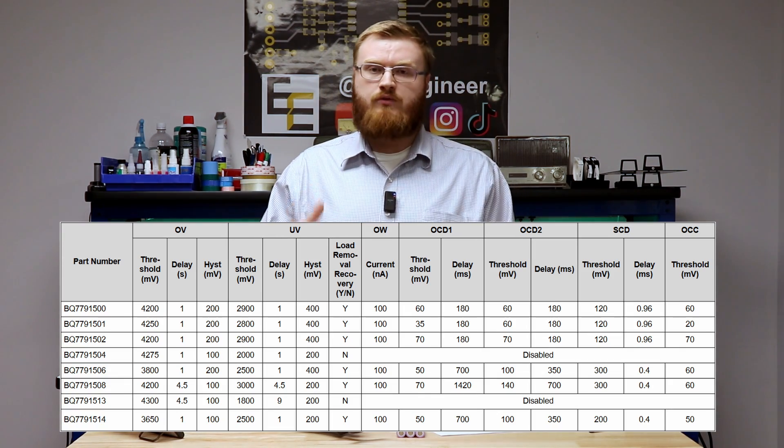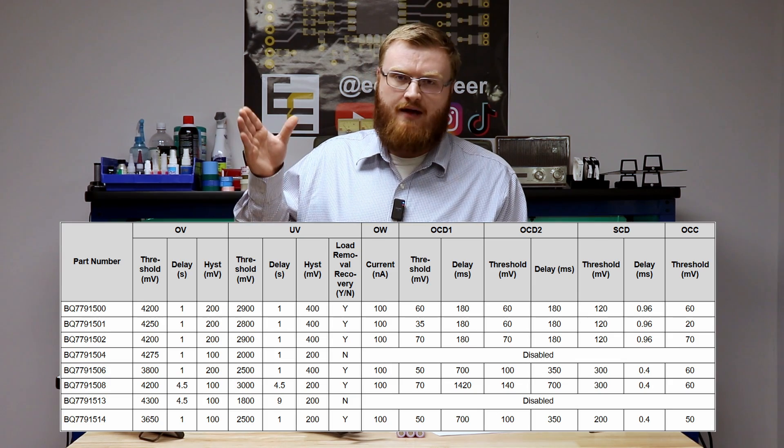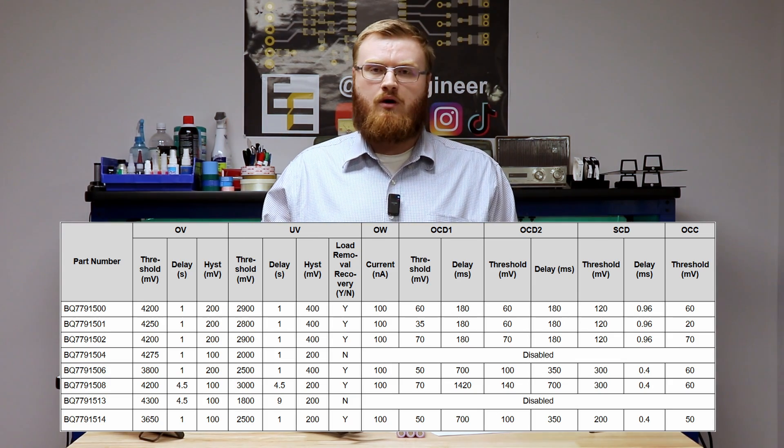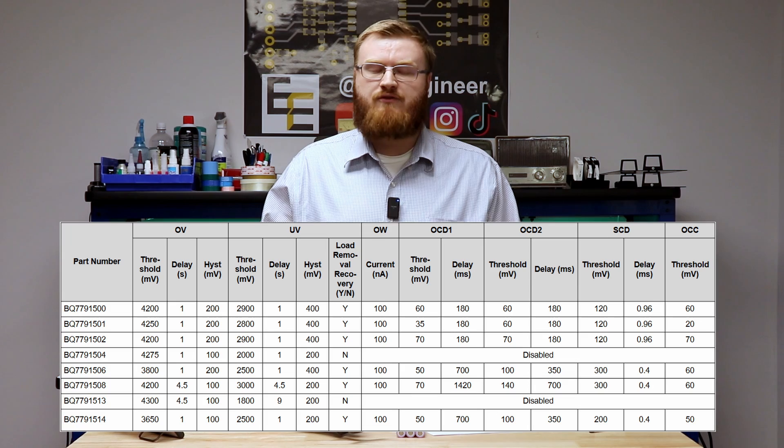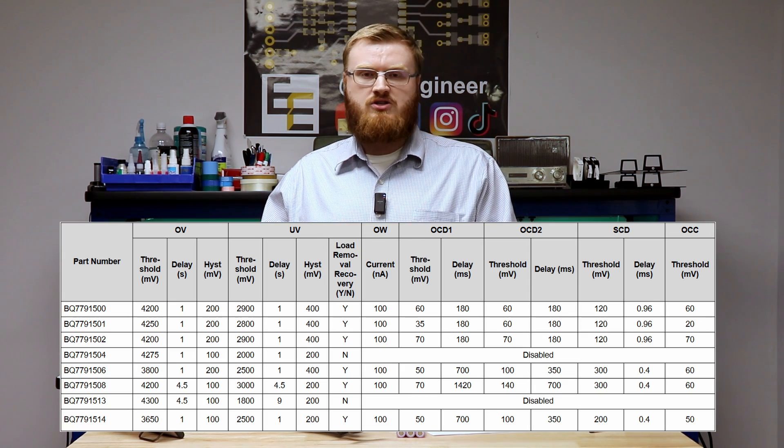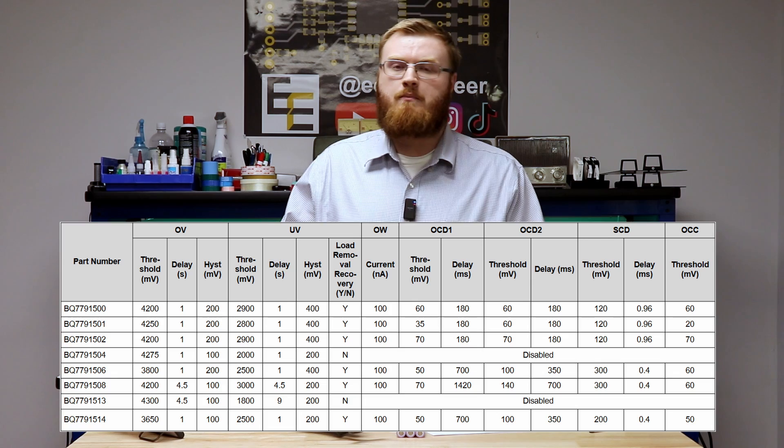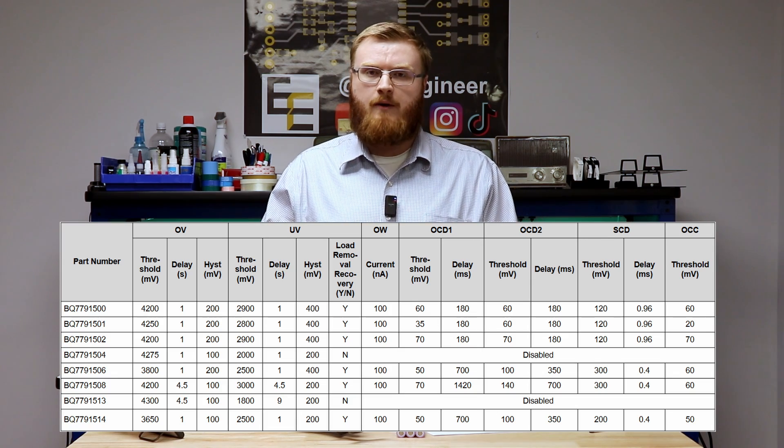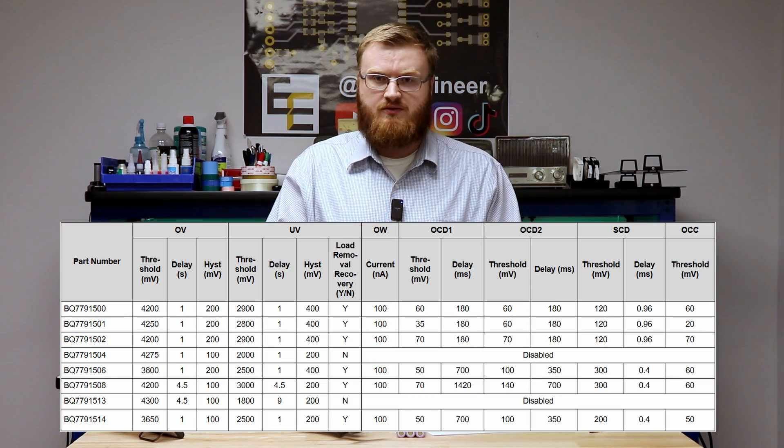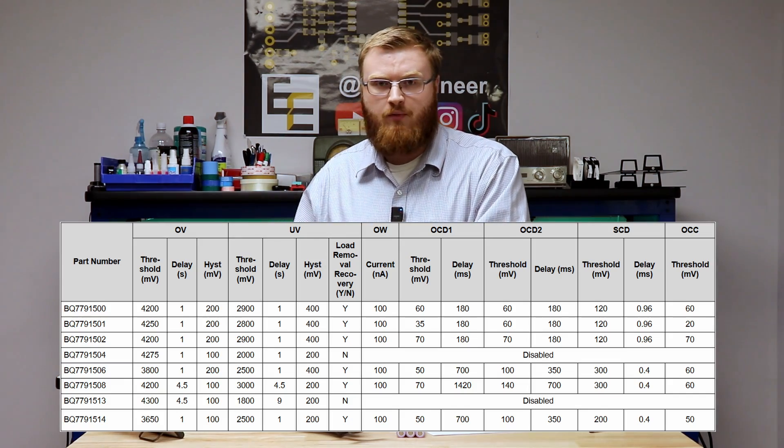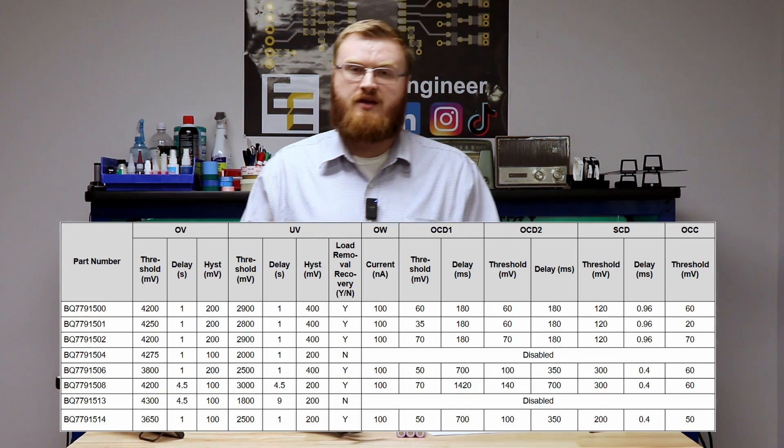So if we take a look here at the voltage trip points, you can see there are several, several options for your different voltage trip points. If you go over to your overcurrent discharge trip point, you see there are several millivolt trip points to pick from, and then you pair your current sensor resistor with that millivolt trip point in order to get your current trip point that you need.